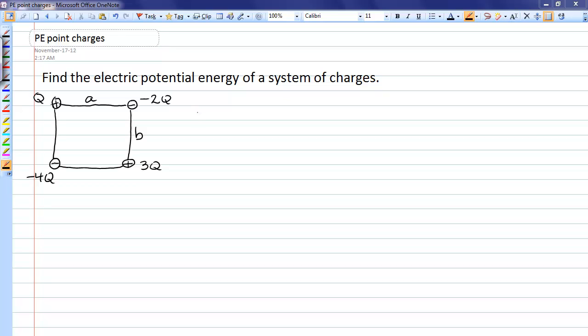In this problem, we're going to calculate the electric potential energy of a system of four charges. The charges are Q, negative 2Q, 3Q, and negative 4Q at the corners of a rectangle.